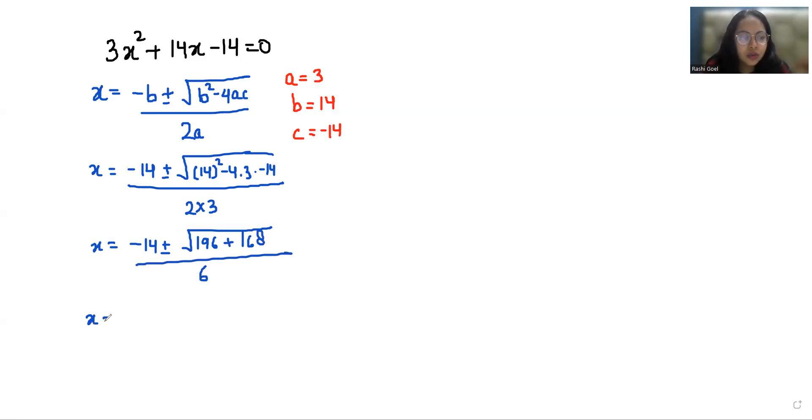So x equals minus 14 plus minus, when we add these two, 364 by 6.